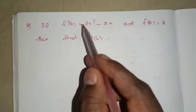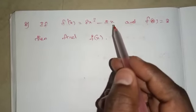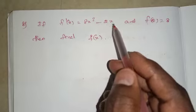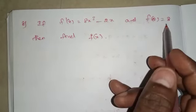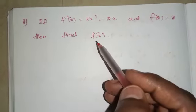Next, 8th sum. If f dash of x equals 8x cube minus 2x, and f of 2 is equal to 8, then find f of x.